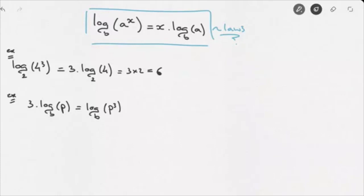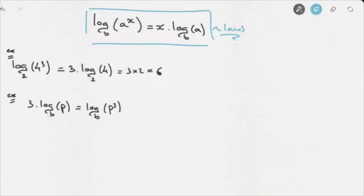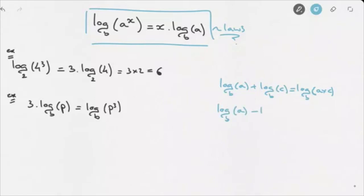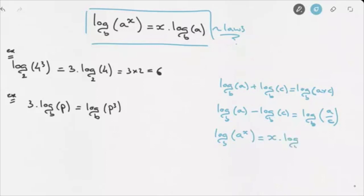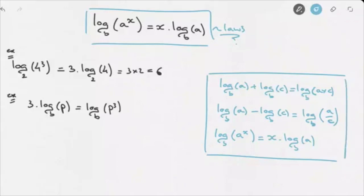Those are the three laws of logarithms. Law 1, the addition law: log base B of A plus log base B of C equals log base B of A times C. Law 2: log base B of A minus log base B of C equals log base B of A over C. Law 3: log base B of A to the power of x equals x times log base B of A. Make sure to note all three of these laws, as we'll be needing them to simplify and calculate logarithmic expressions.